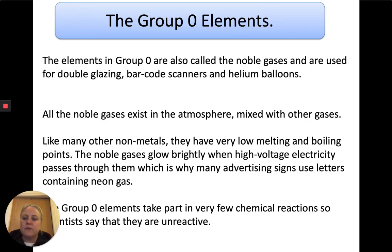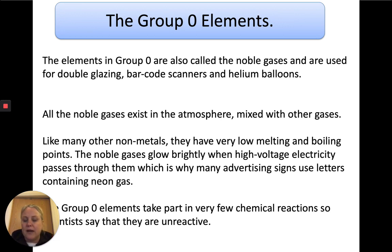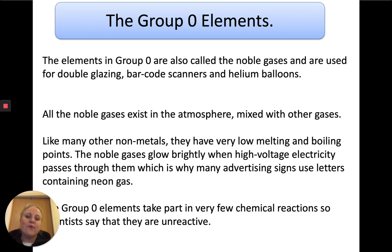The group zero elements are called the noble gases. They're used for things like double glazing, barcodes, and helium balloons. They all exist as a gas in the atmosphere mixed with other gases — they're not reactive. They only react very, very rarely; they're unreactive. Noble gases can glow brightly with high voltage electricity, which is why neon is used in advertising signs. They have very low melting points and boiling points, which is why they're a gas at room temperature.